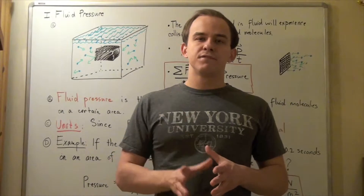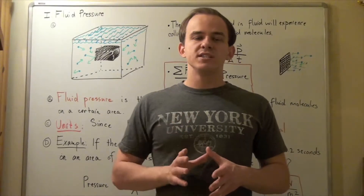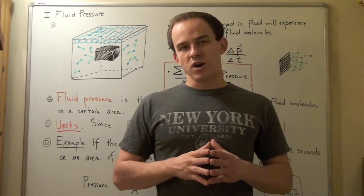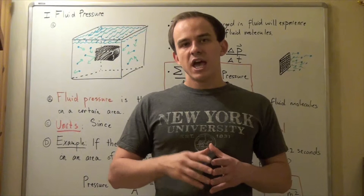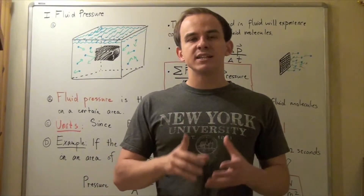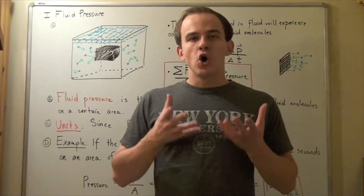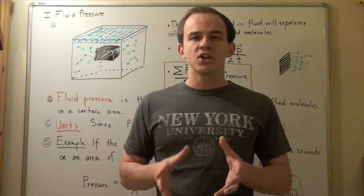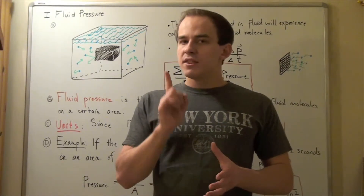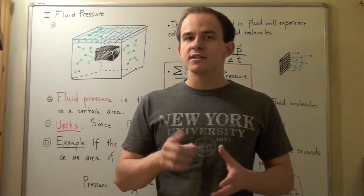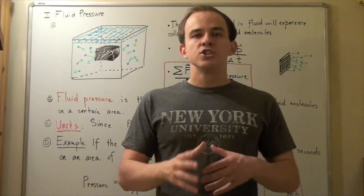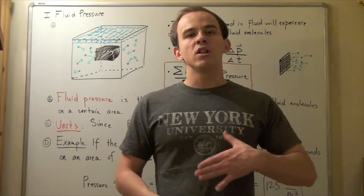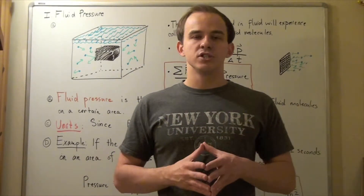We already spoke about fluids, and we said that fluids include both gases as well as liquids. We also said that the intermolecular bonds holding two or more molecules in a fluid together are relatively weak, and this weakness allows our molecules to move about with some translational as well as rotational speeds.